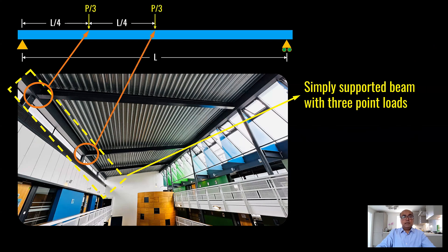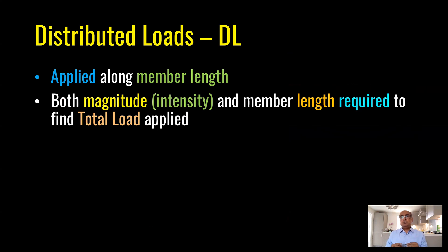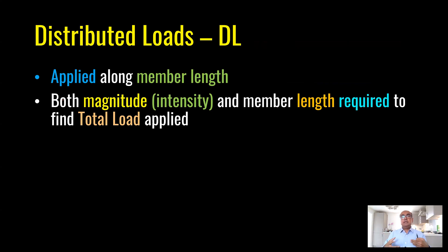This is another example: a simply supported beam with three point loads. Distributed loads are applied along the length of the member, covering entire or partial length. Both magnitude and member length are required to work out total load. For example, if loading is 4 kilonewton per meter applied over a 5-meter span, the total load is 20 kilonewton.